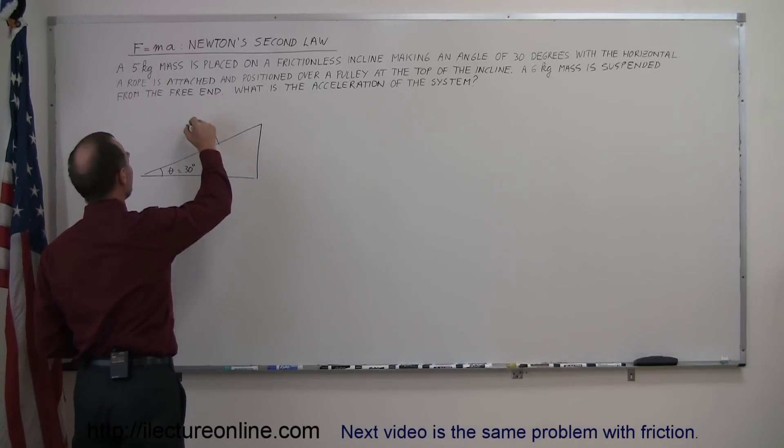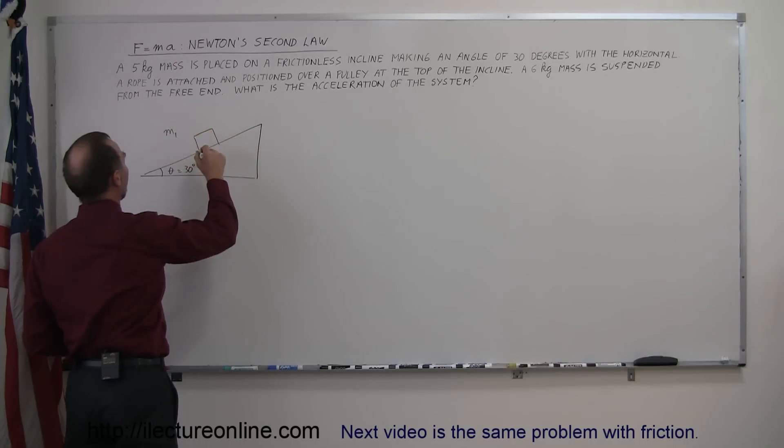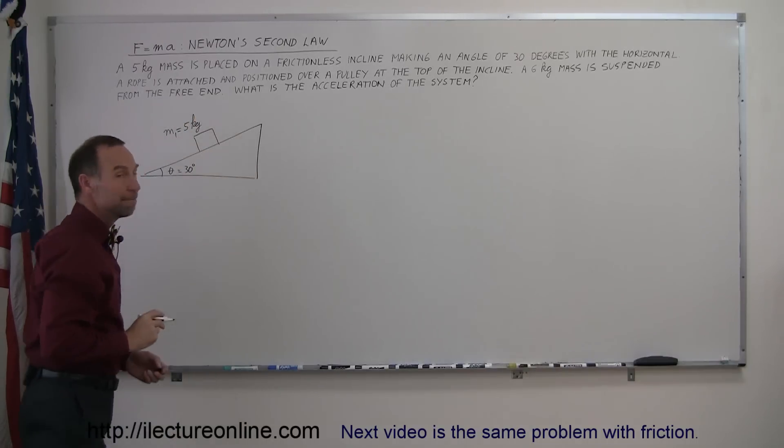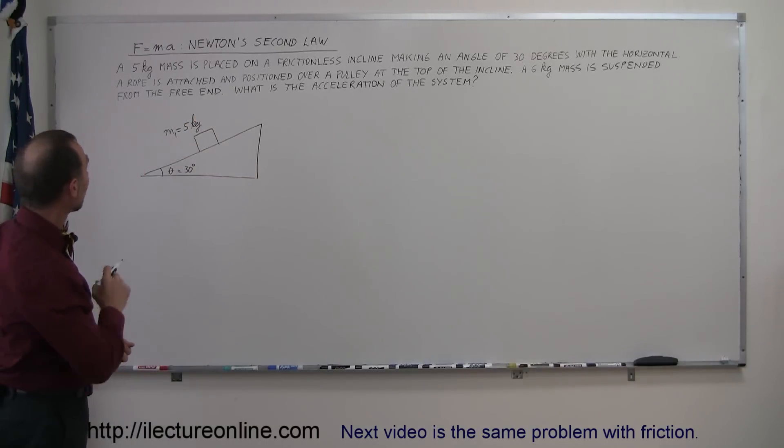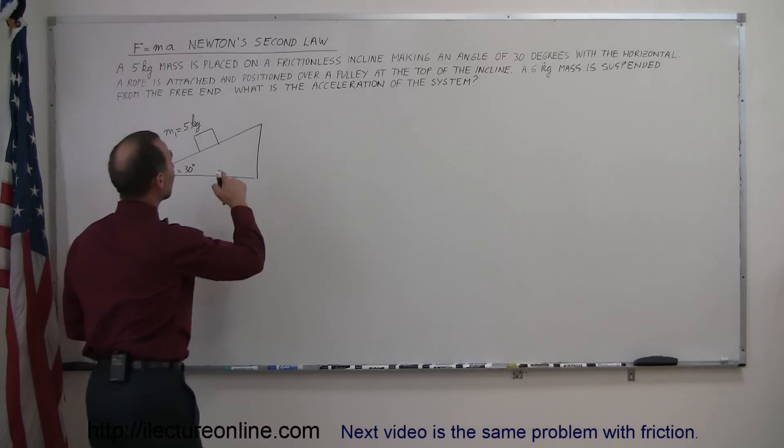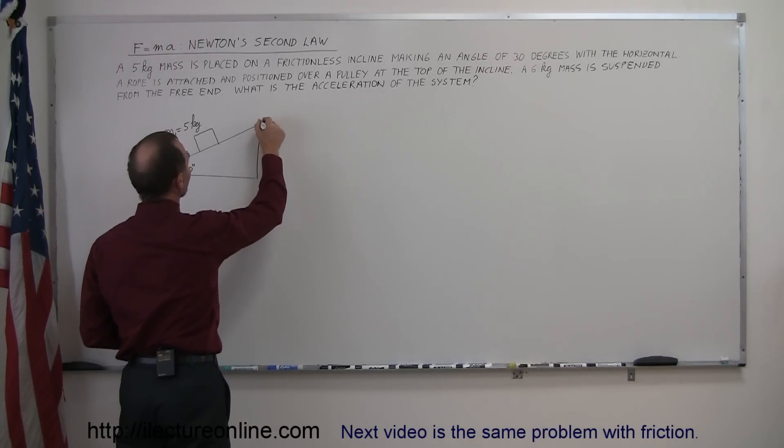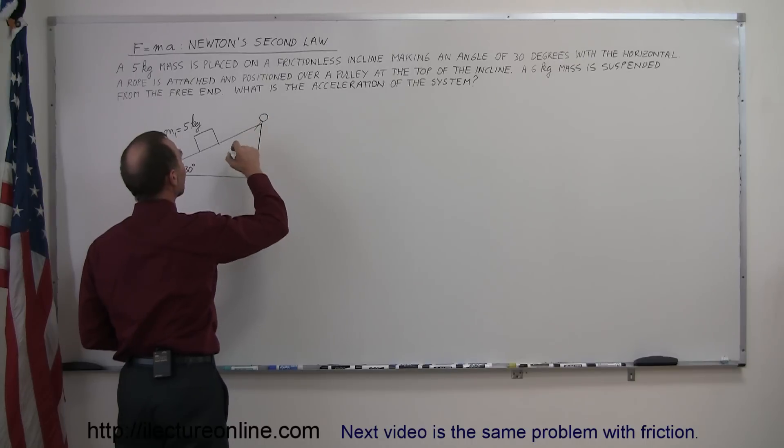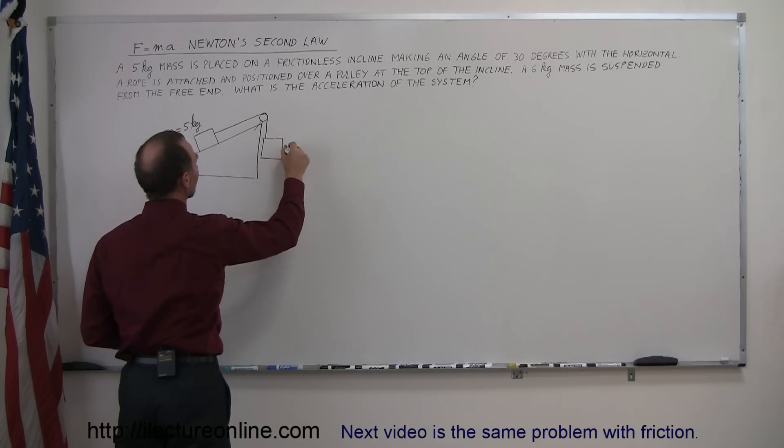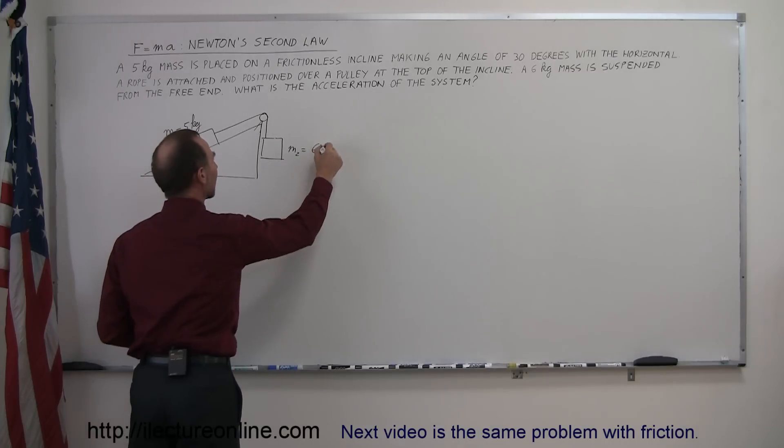Let's call that mass one. That mass has a mass of five kilograms. Then we attach a rope to that, and there's a pulley at the very end, at the top of the incline. So we position the rope over the pulley. And on the free end, we place another mass. Let's call it mass two, and that is equal to six kilograms.